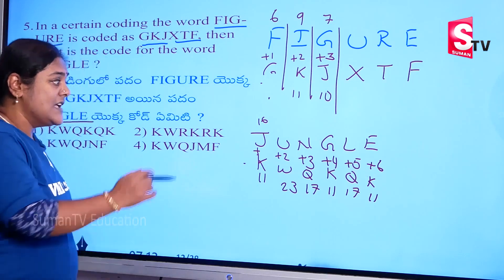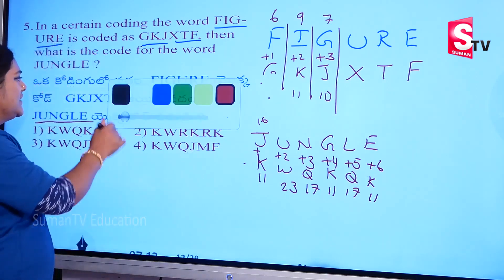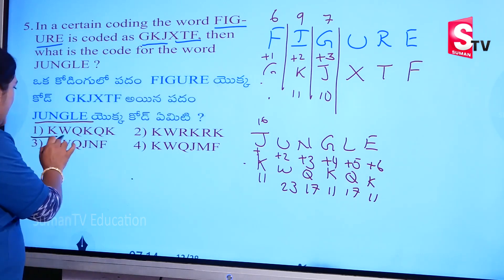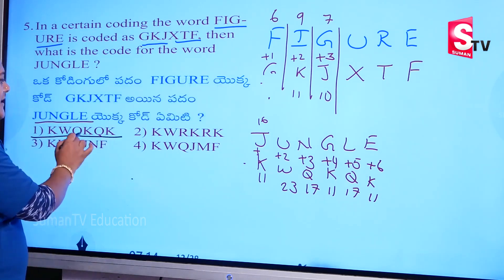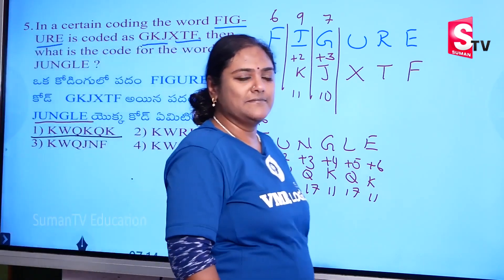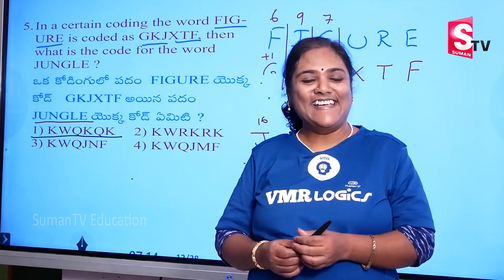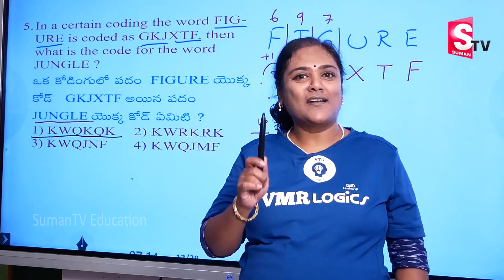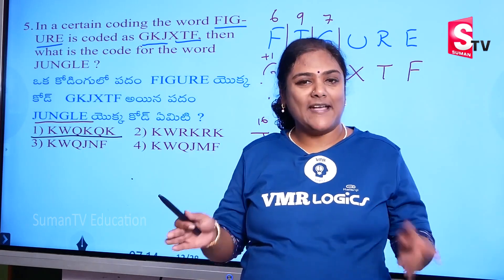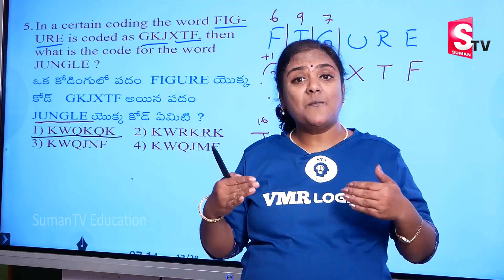So the answer is: K, W, Q, K, Q, K. The first one is K.